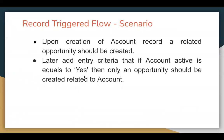Going back to the requirement — the first part is complete: upon creation of an account record, a related opportunity is created. Now the requirement says to add entry criteria so that if account active equals yes, then only an opportunity should be created related to the account.